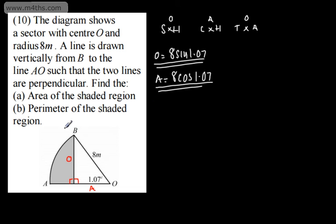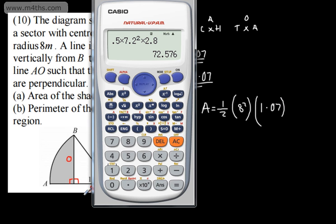We need to find the area of the shaded region. What I'm going to do here is find the area of the sector and take away the area of the triangle. So for the sector, we know that that is going to be 1/2 R squared theta. So we can say that the area is going to be 1/2, we're going to have 8 squared multiplied by 1.07. So let's put this in a calculator. We've got 1/2 of 64, which is going to be 32, multiplied by 1.07, which is going to give me 34.24.